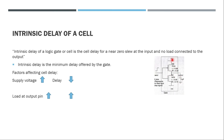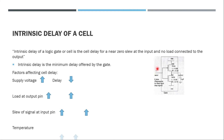Consider the load capacitance like a bucket that needs to be filled with water coming from VDD — electrically, this is the charge filling the capacitor. A bigger capacitor takes more time to charge, so as the output load increases, delay increases. The third parameter is the input slew: as the slew of the signal at the input increases, the delay also increases.